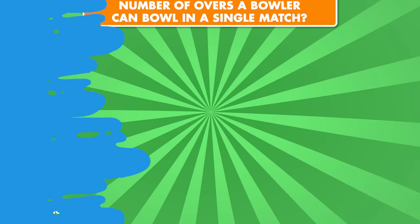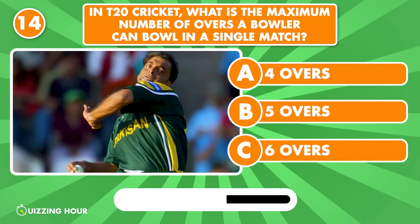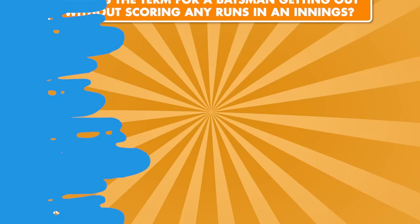In T20 cricket, what is the maximum number of overs a bowler can bowl in a single match? Four overs. What is the term for a batsman getting out without scoring any runs in an innings?